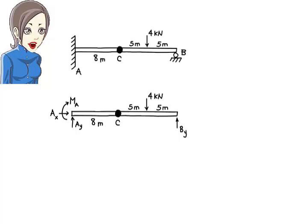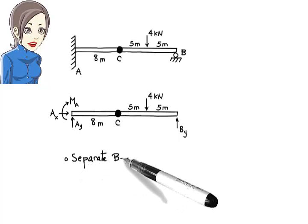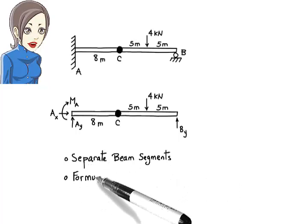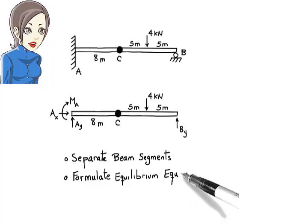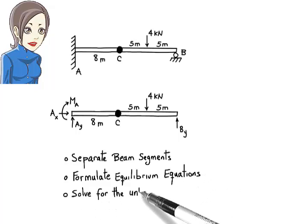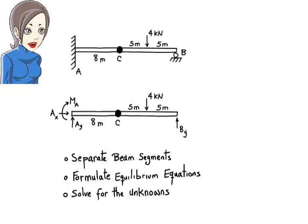Here is how. The analysis of a beam with an internal hinge involves separating the beam segments at the hinge, formulating three equilibrium equations for each segment, then solving them simultaneously for the unknown reaction forces and the internal shear force at the hinge.